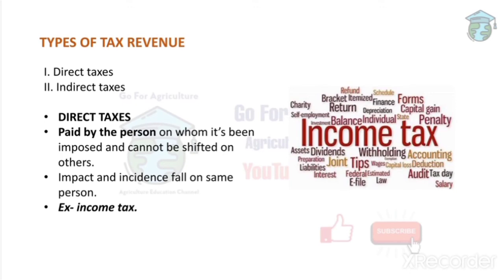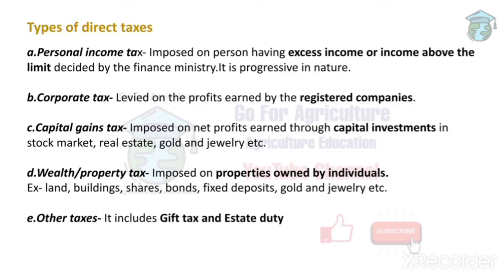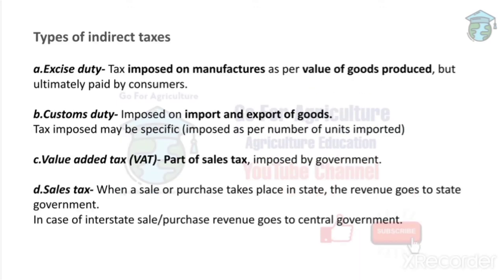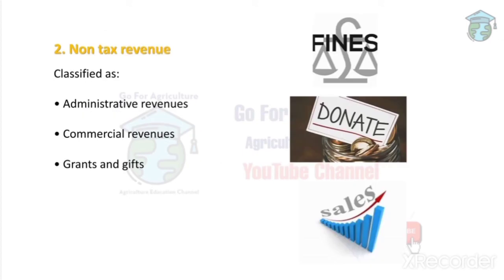To distinguish: in tax revenue, indirect taxes like sales tax and GST involve private sector transactions. In non-tax revenue, the government is directly involved — fines, license fees, passport fees, and railways are prime examples — even though we are paying the money, the government runs or imposes these.